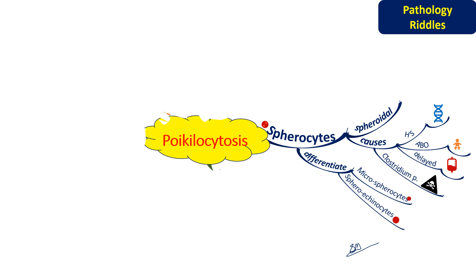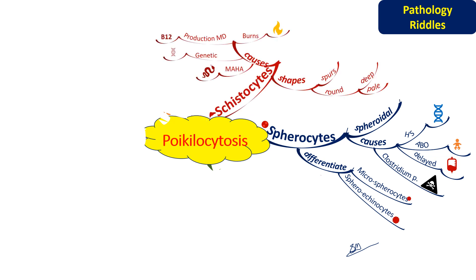The next poikilocyte is schistocyte. Schistocytes are smaller than RBCs and are of varying shapes — they can have sharp angles or spines on their surface called spurs, or they may be round. The round schistocytes may stain deeply or may be pale.